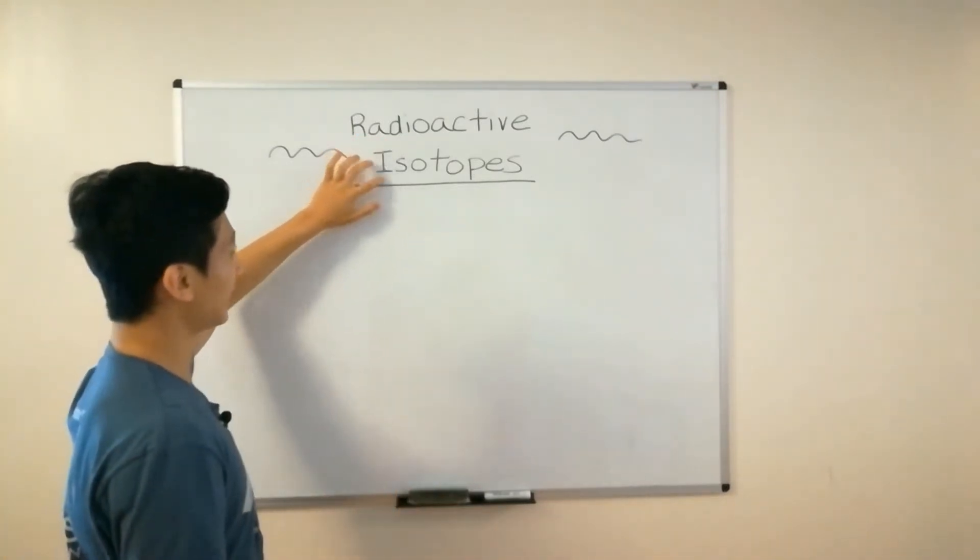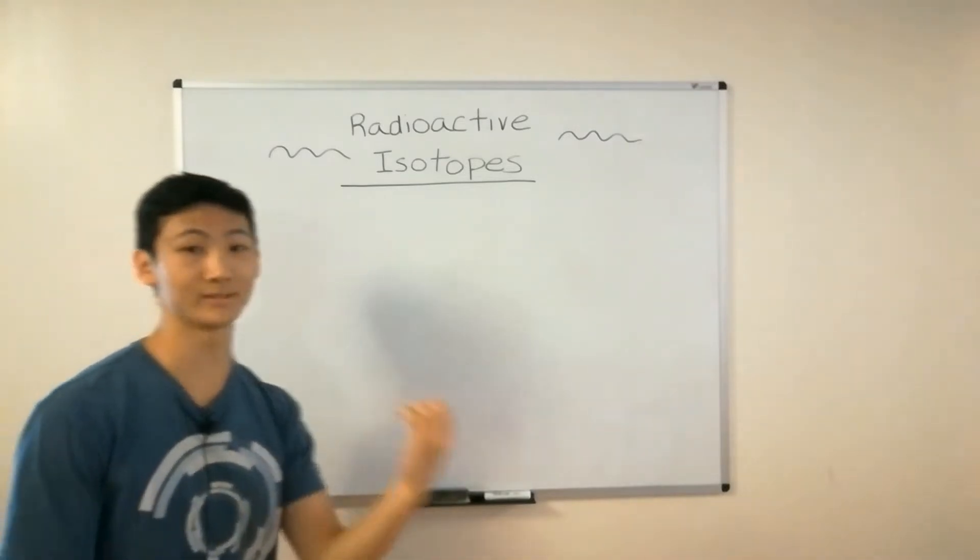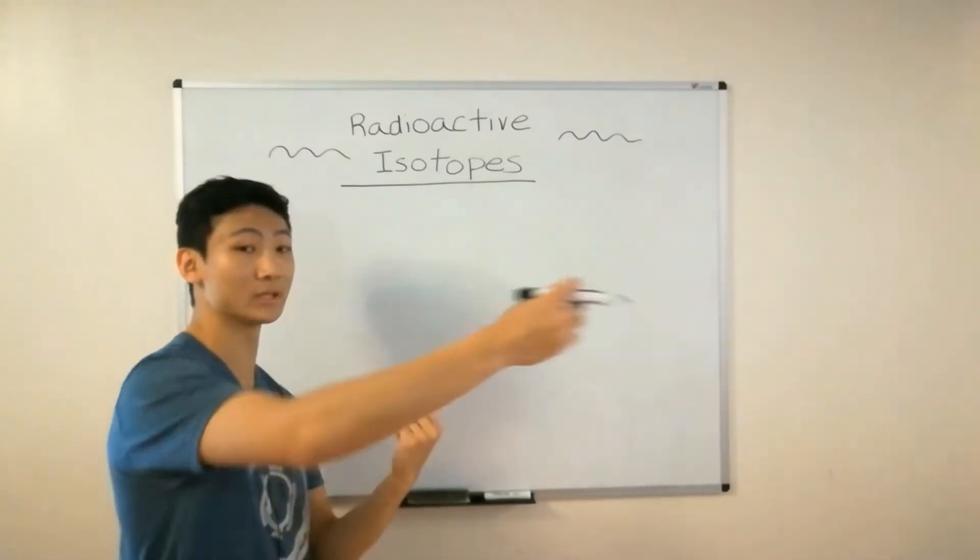Radioactive isotopes are isotopes whose nuclei are unstable, so they give off radiation to make themselves more stable.